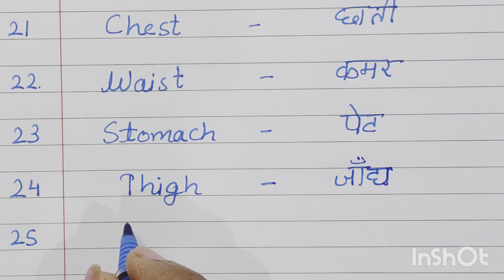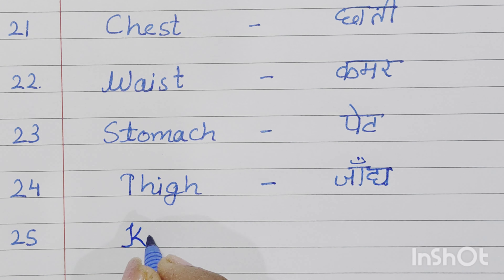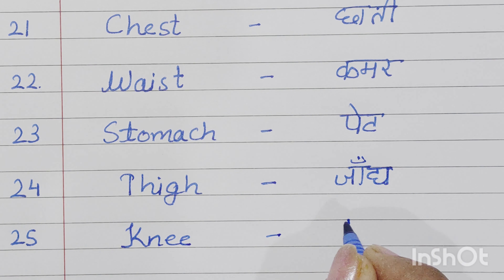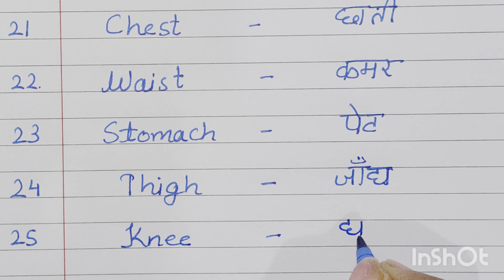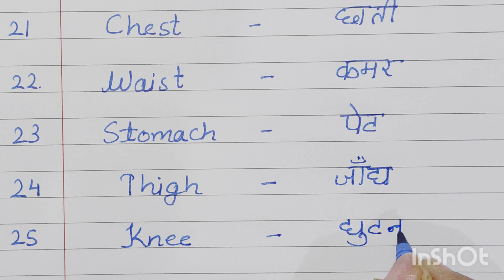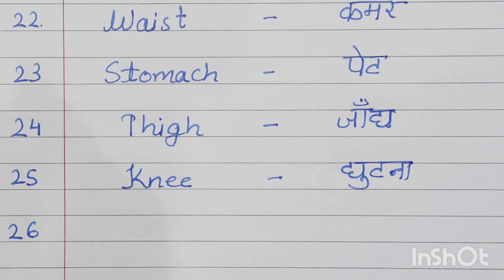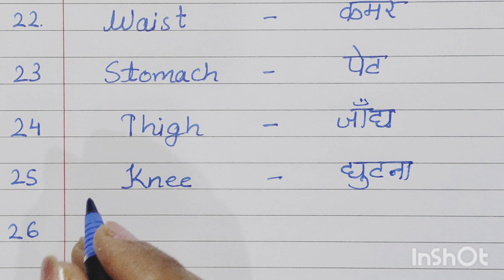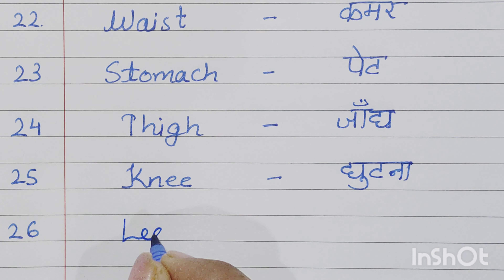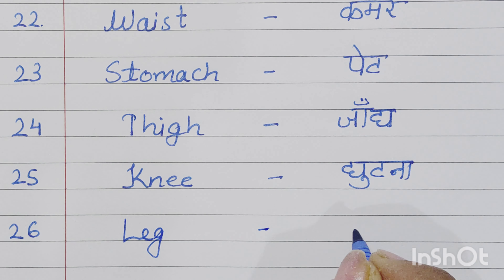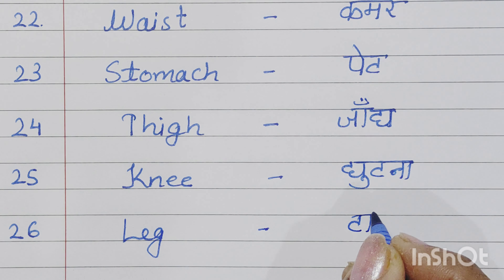Seventeenth number is hand. Hand means haat. H-A-N-D, hand. Then comes eighteenth number, elbow. E-L-B-O-W, elbow means kohni.